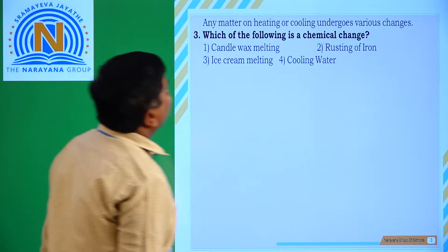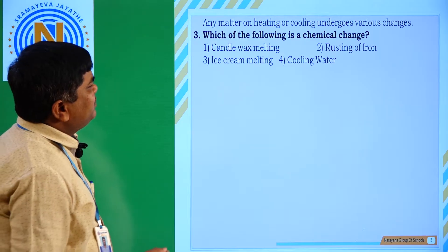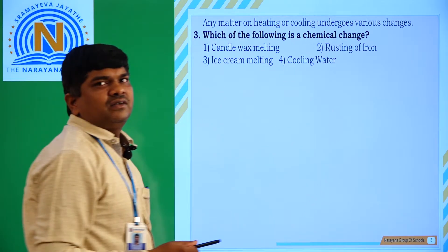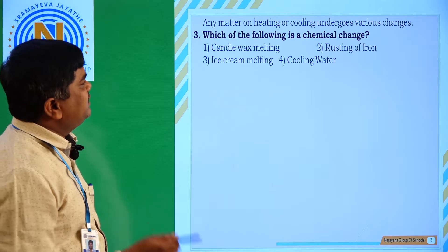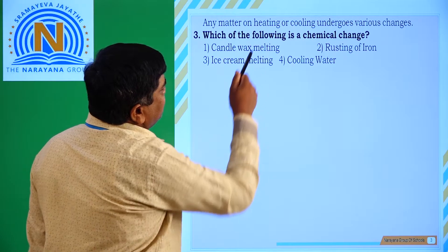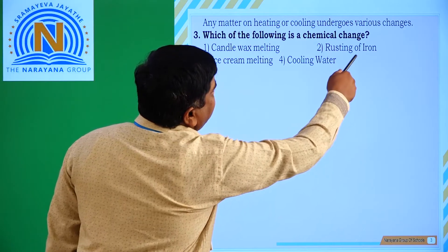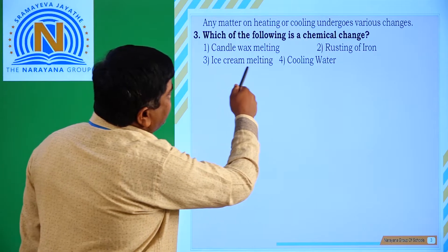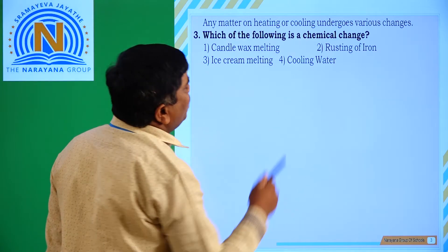Question number 3: Which of the following is a chemical change? The options given are: first, candle wax melting; second, rusting of iron; third, ice cream melting; and fourth, cooling water.